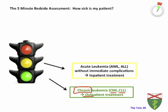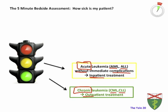Yellow light and more critical is acute leukemia. Acute leukemia — both AML and ALL — is an issue that needs to be managed urgently. Importantly, the yellow light applies to patients without immediate complications of leukemia. They need inpatient treatment, so outpatient treatment is certainly not sufficient. But unless they have those complications we're about to discuss, they don't necessarily need to be seen overnight by a hematologist.